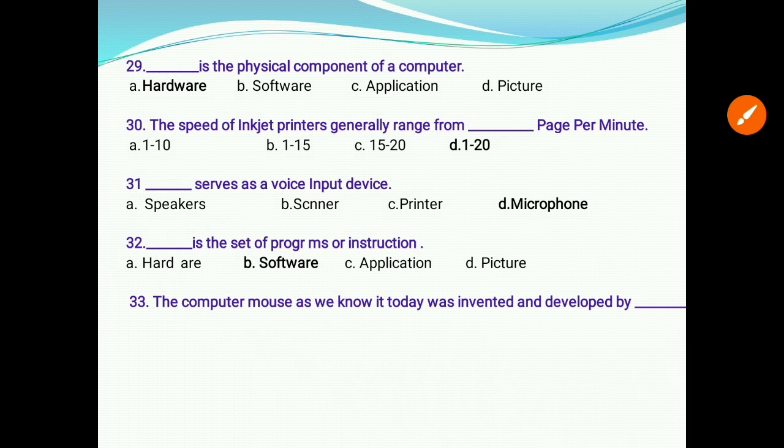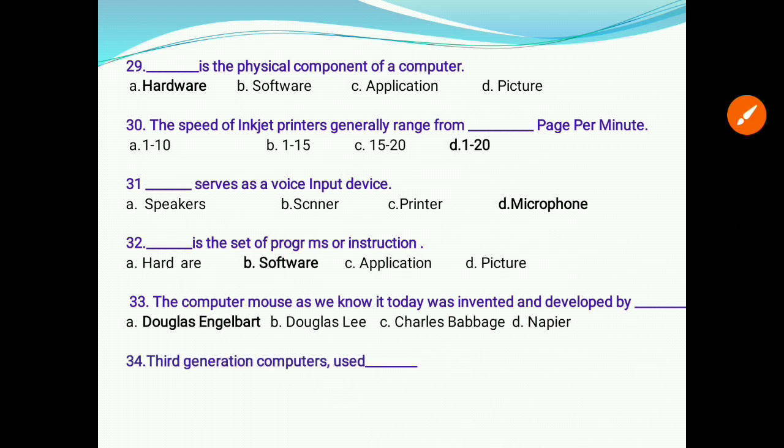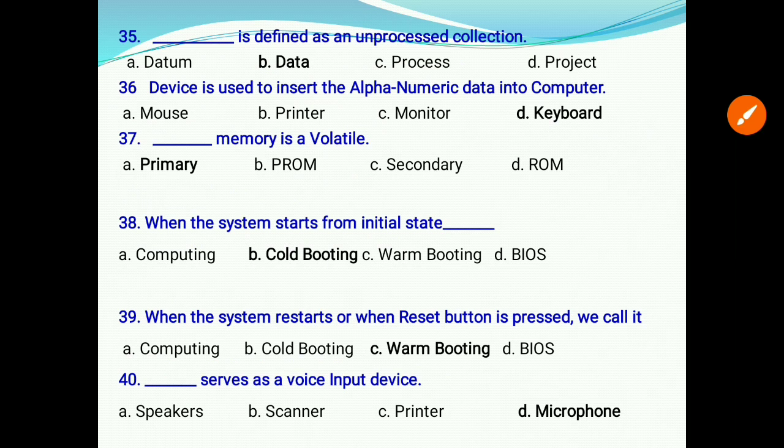The computer mouse, as we know it today, was invented and developed by Douglas Engelbart, option A. Third generation computers used: a) vacuum tubes, b) transistor, c) integrated circuit, d) microprocessors. The answer is C, integrated circuits. The blank is defined as an unprocessed collection: a) datum, b) data, c) process, d) project. The answer is B, data. Question 36: Device is used to insert alphanumeric data into computer. The answer is D, keyboard.